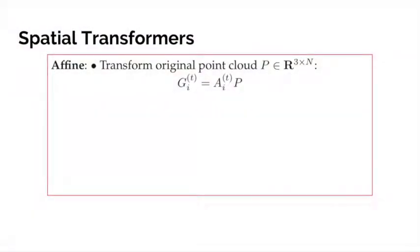Affine transformer. We first apply the affine transformation a to the original point cloud to get the transformed point cloud g. Then, apply k-nearest neighbors to get the neighborhood n sub i on the transformed point cloud g.